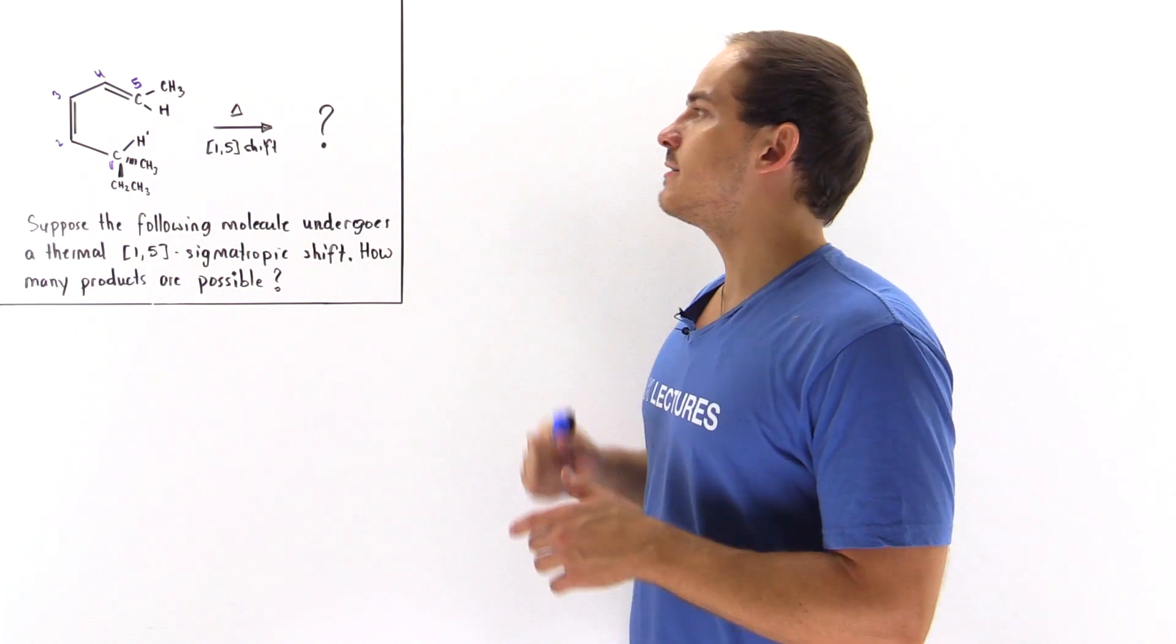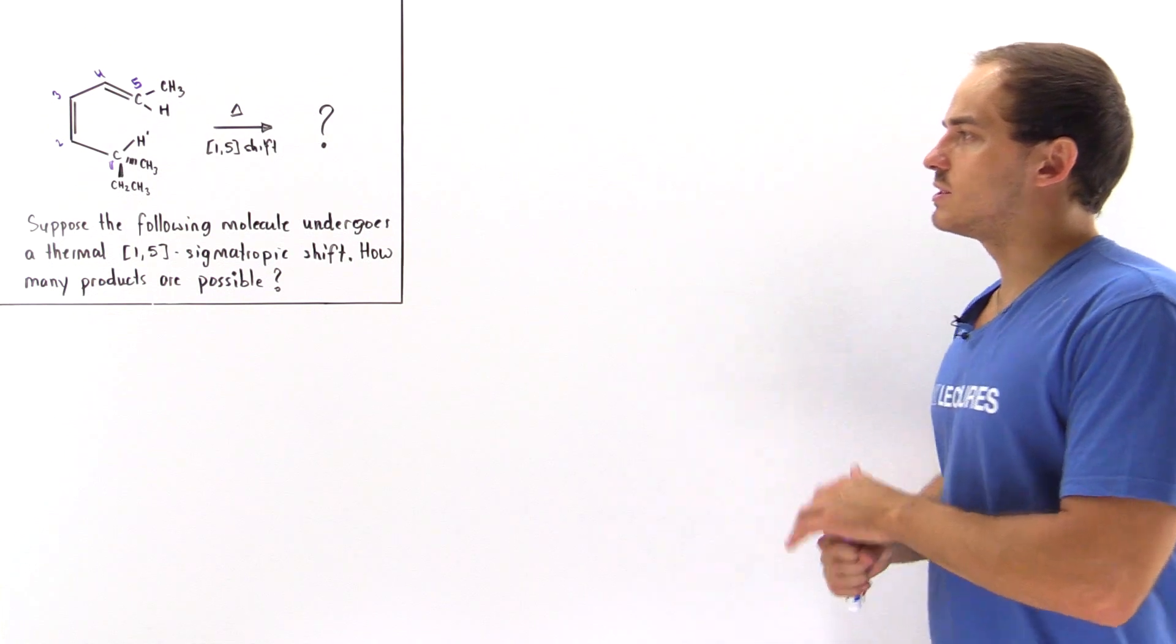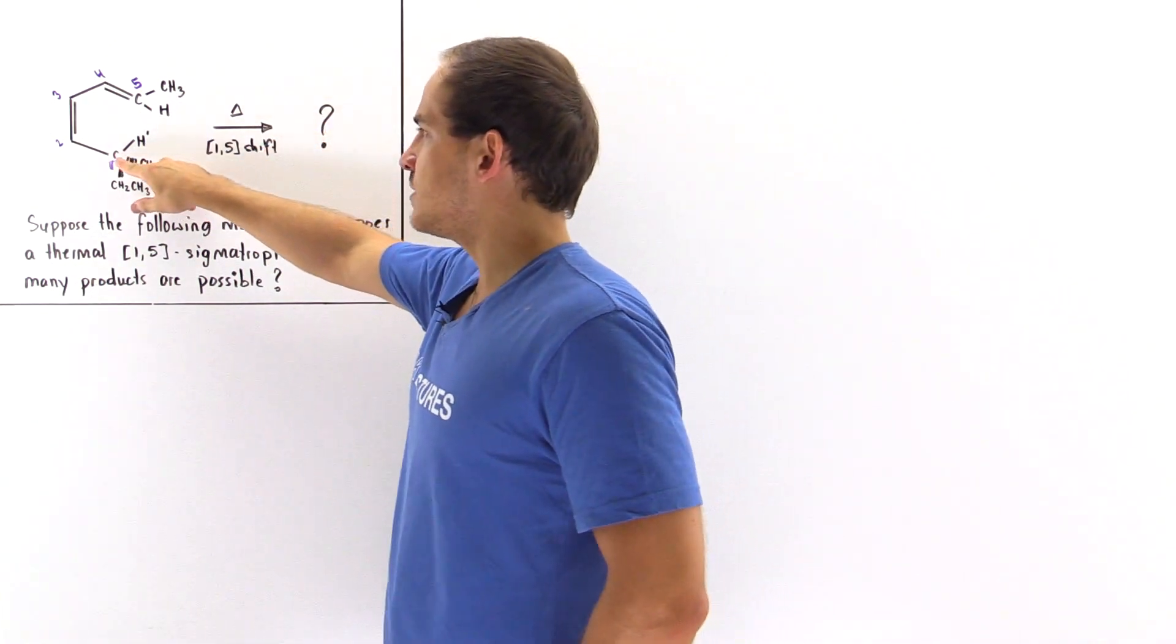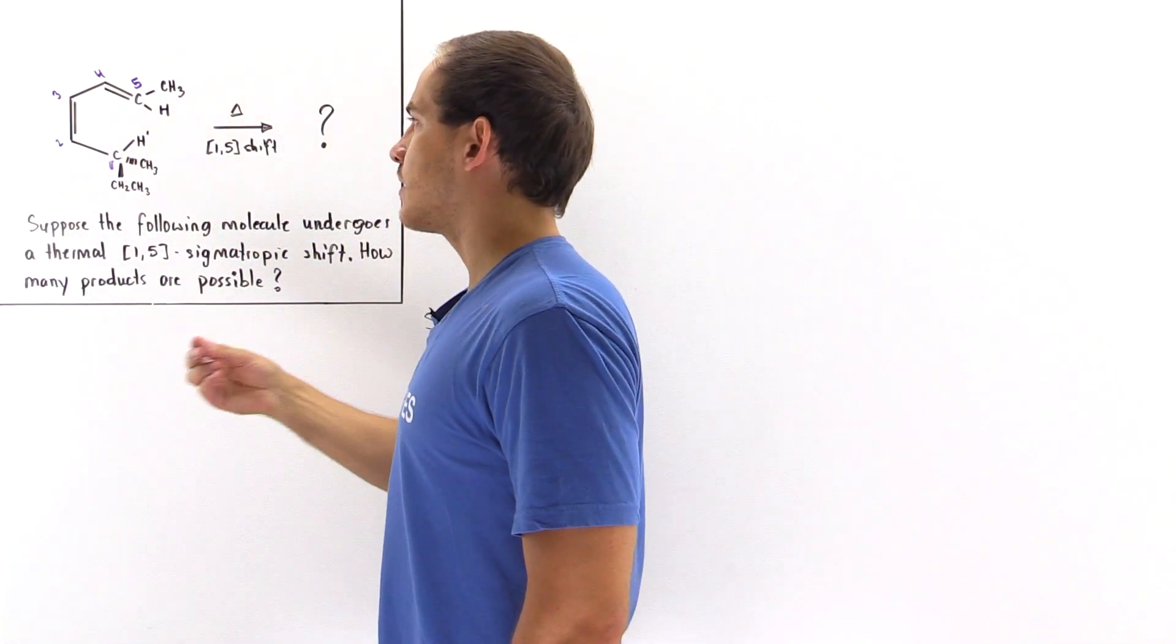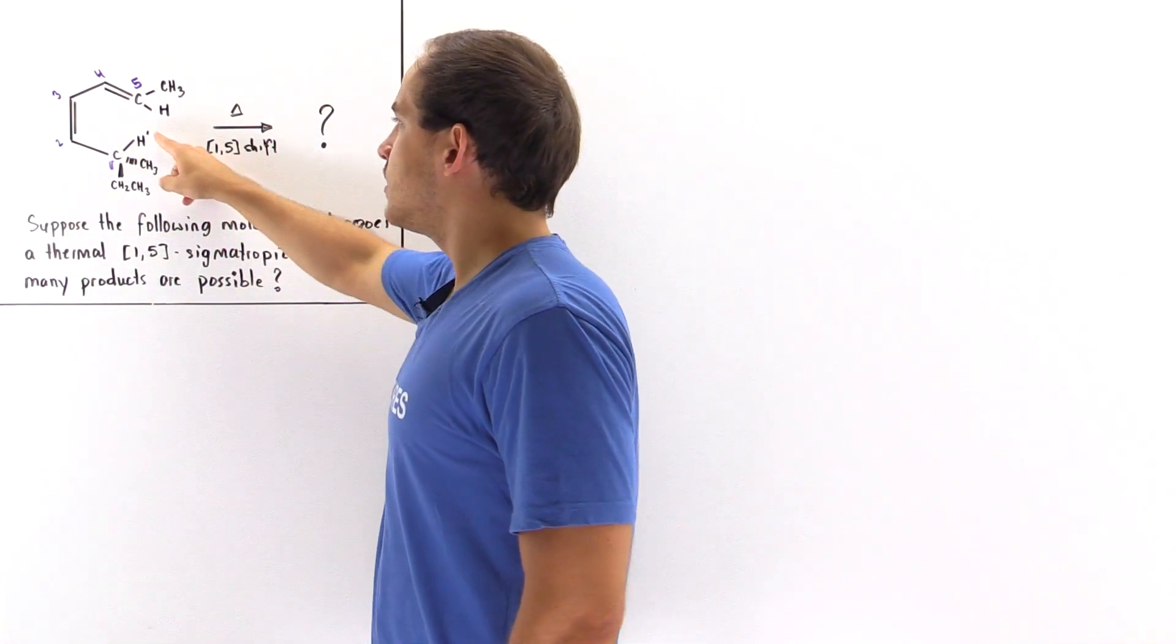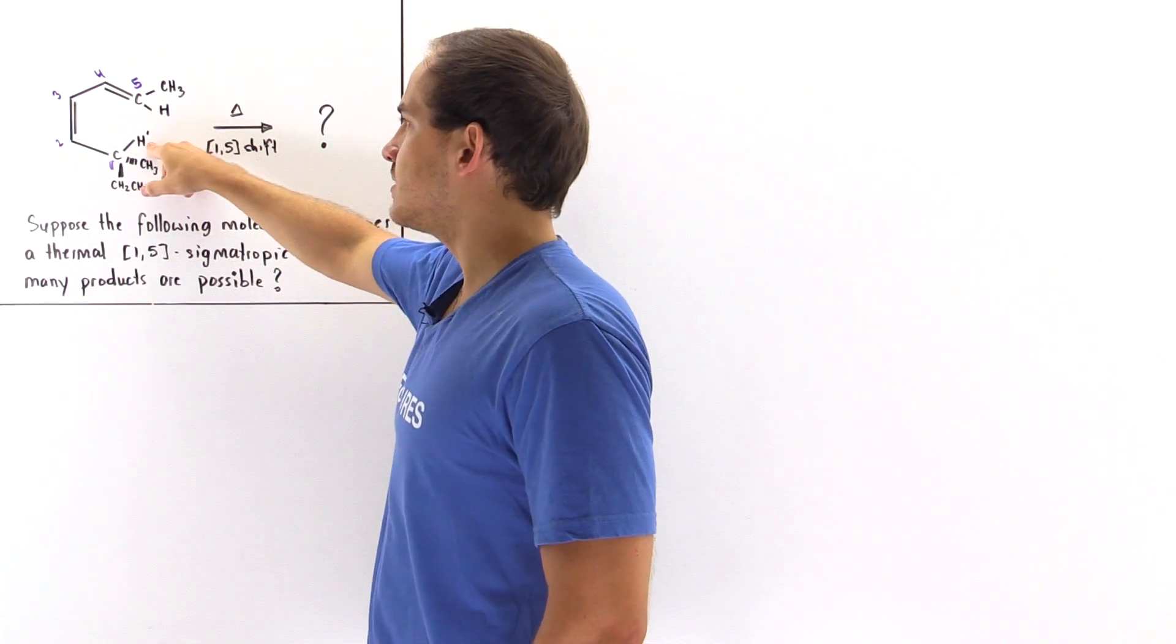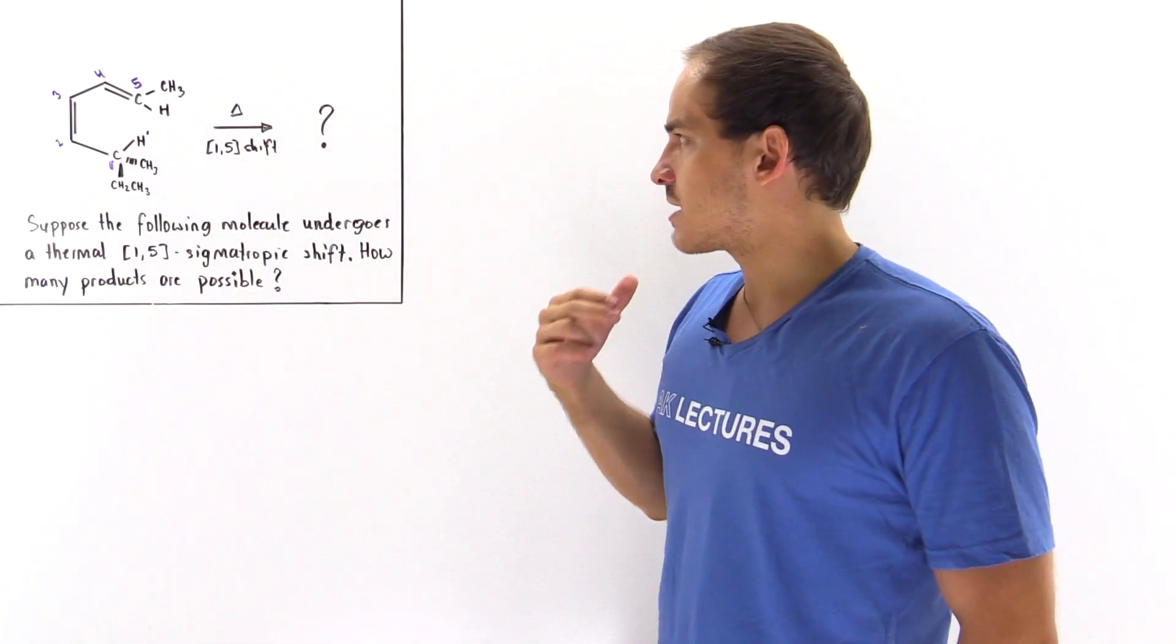Now how many different products are actually possible? This is what we want to answer. So let's begin by looking at this molecule. This is the carbon, the starting carbon from which our H atom will migrate. This H' is the atom that we're looking at. That's why we designate it with H' to differentiate it from any other H atom on the molecule.